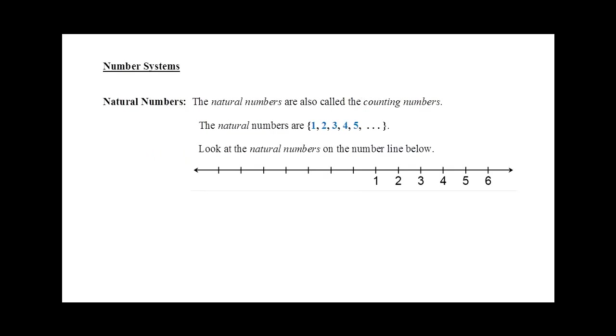The first number system we will talk about are the natural numbers. The natural numbers are also called the counting numbers. The natural numbers start with the number 1 and count 1, 2, 3, 4, 5, 6, etc. This is the first number system that you learned as a child.